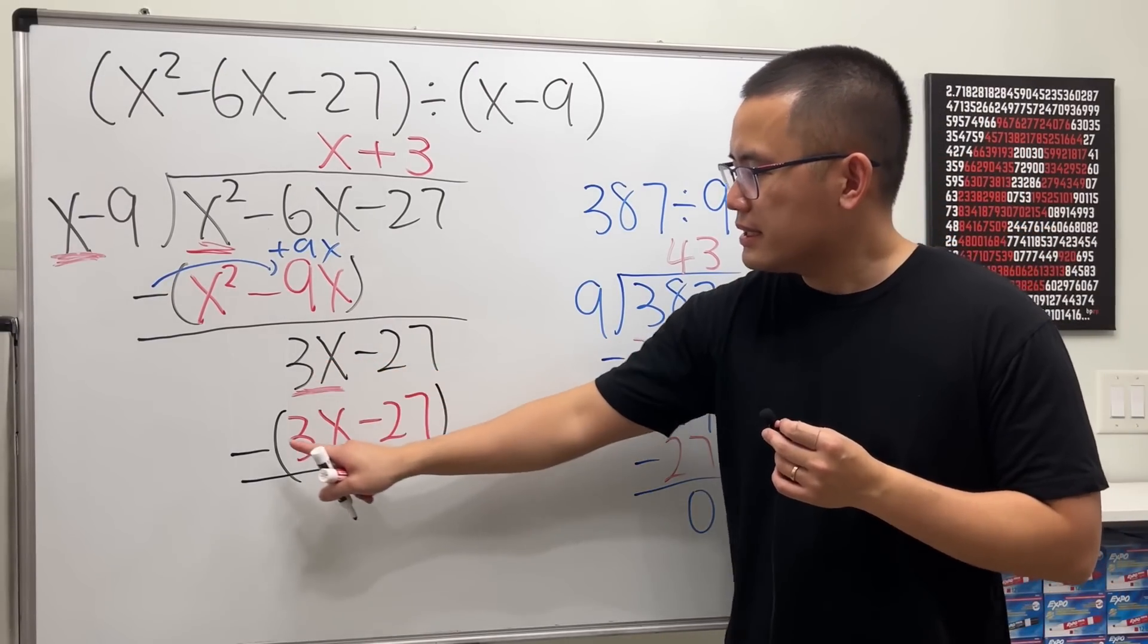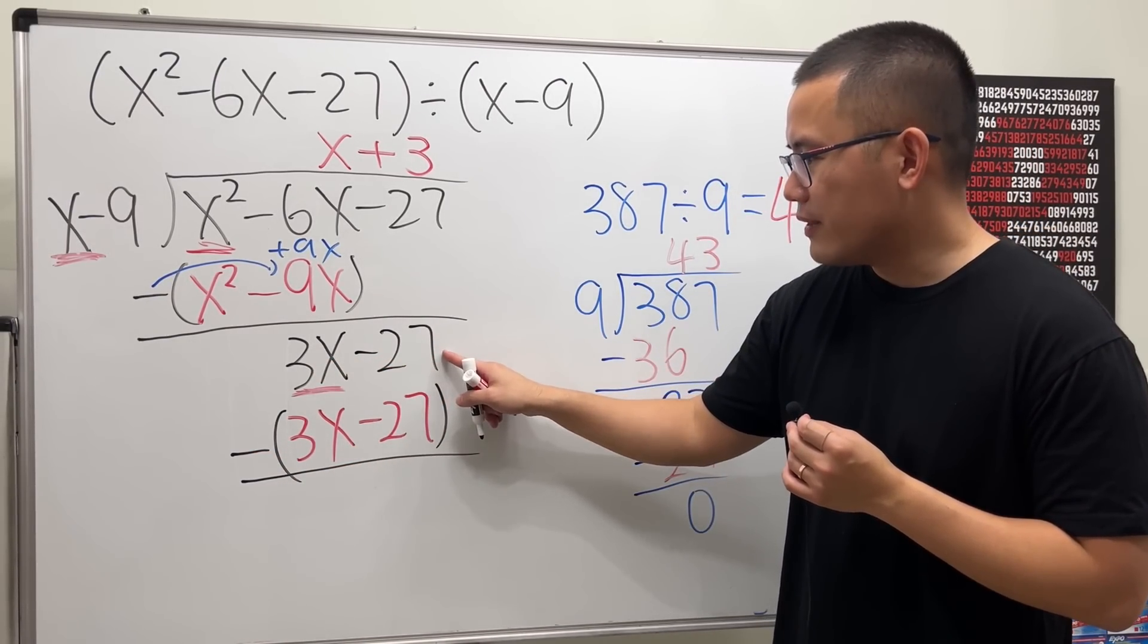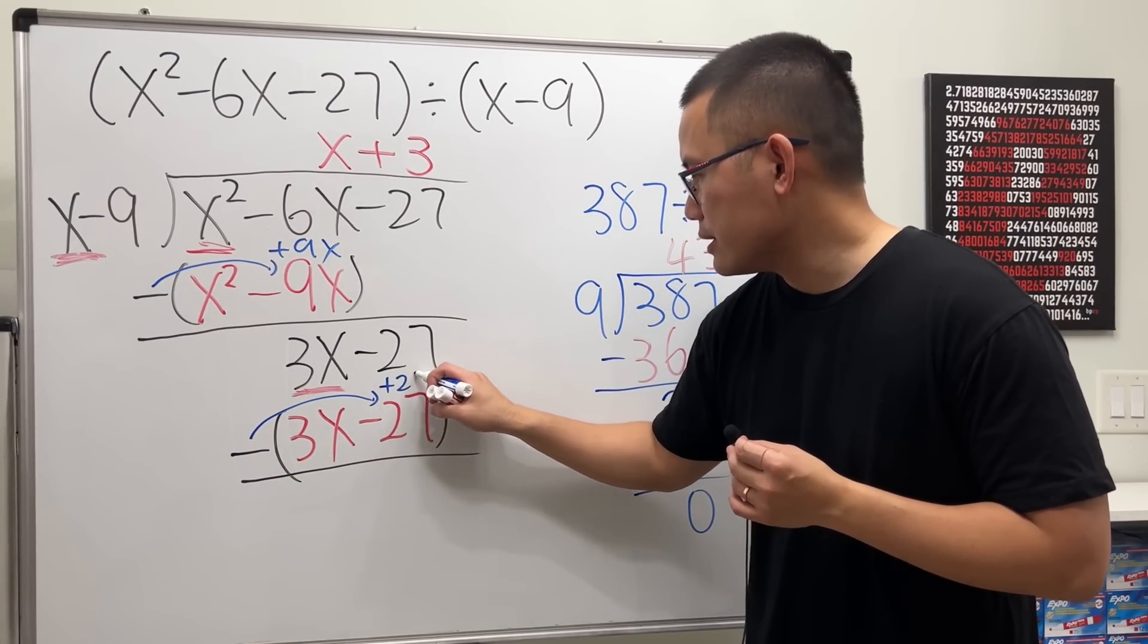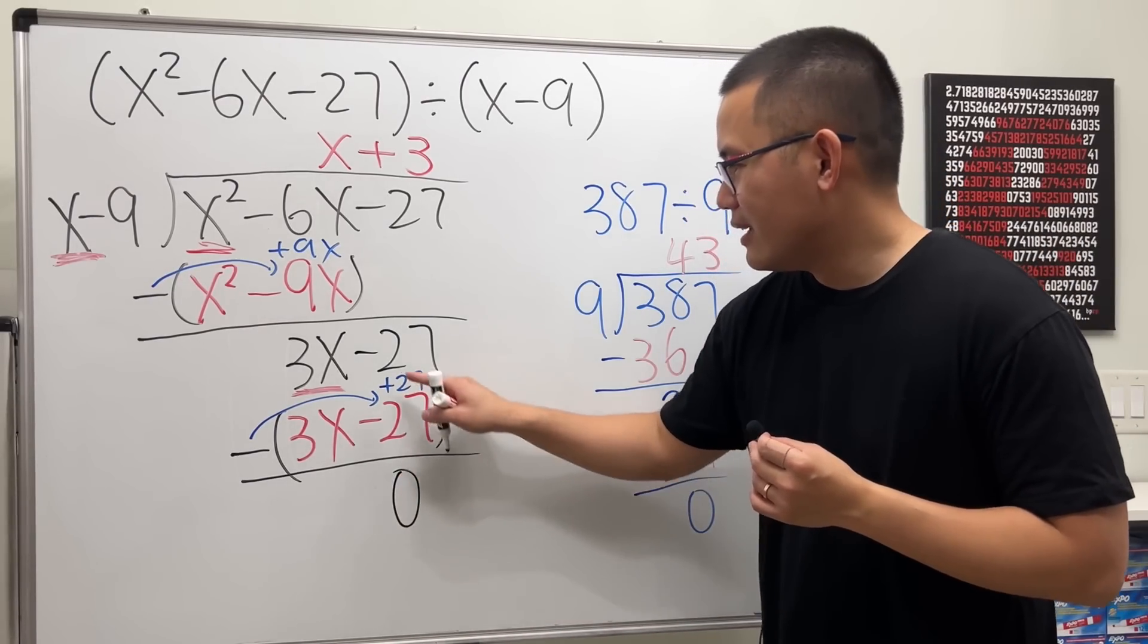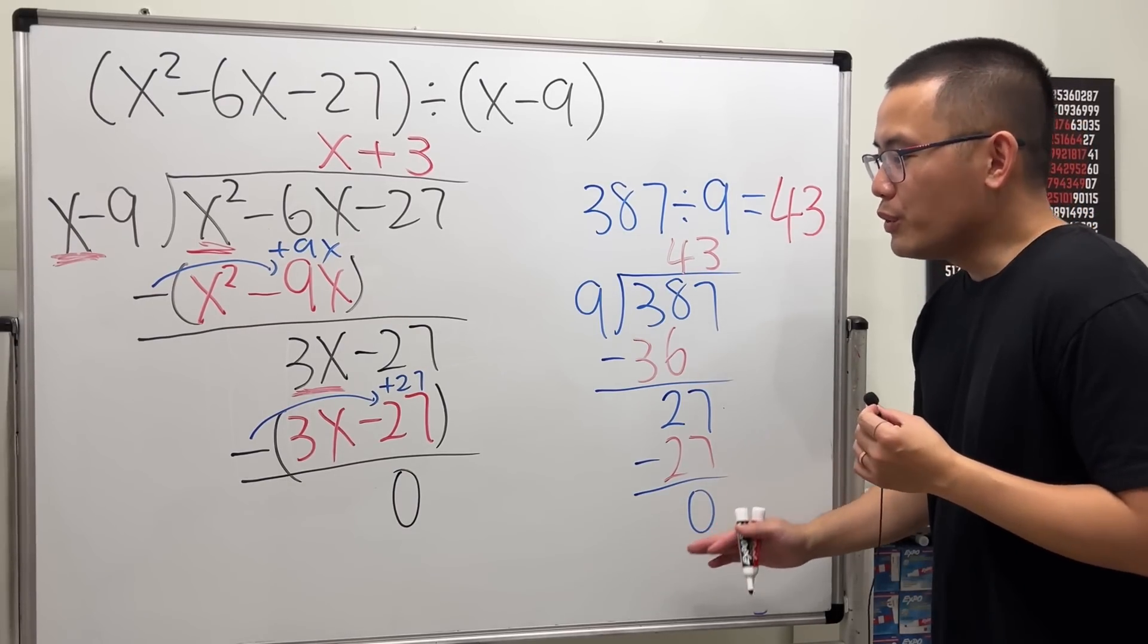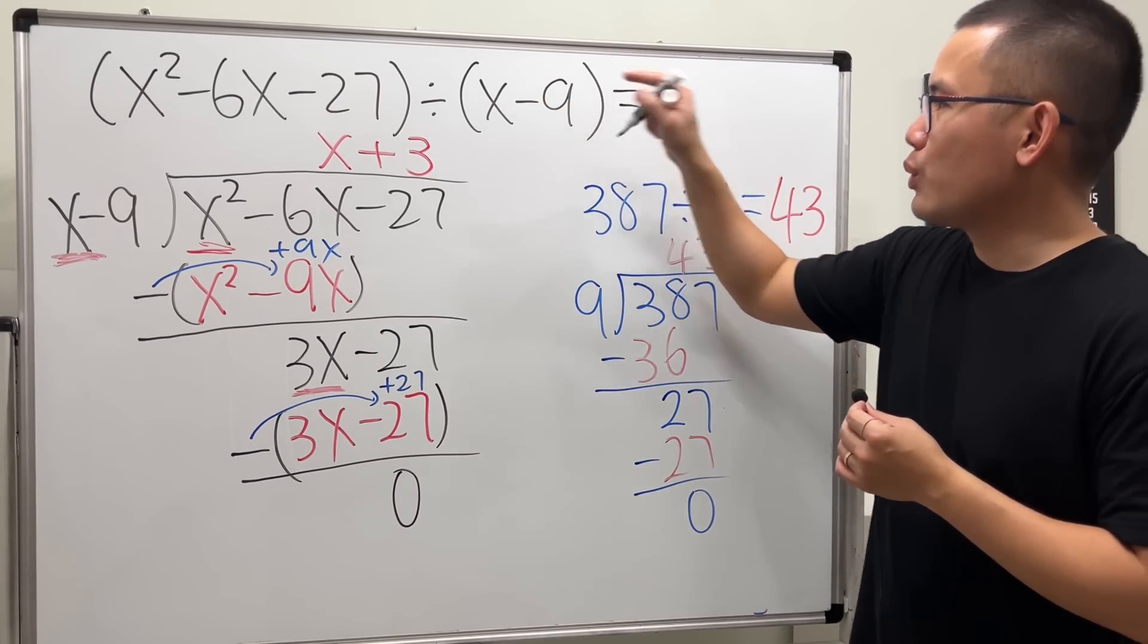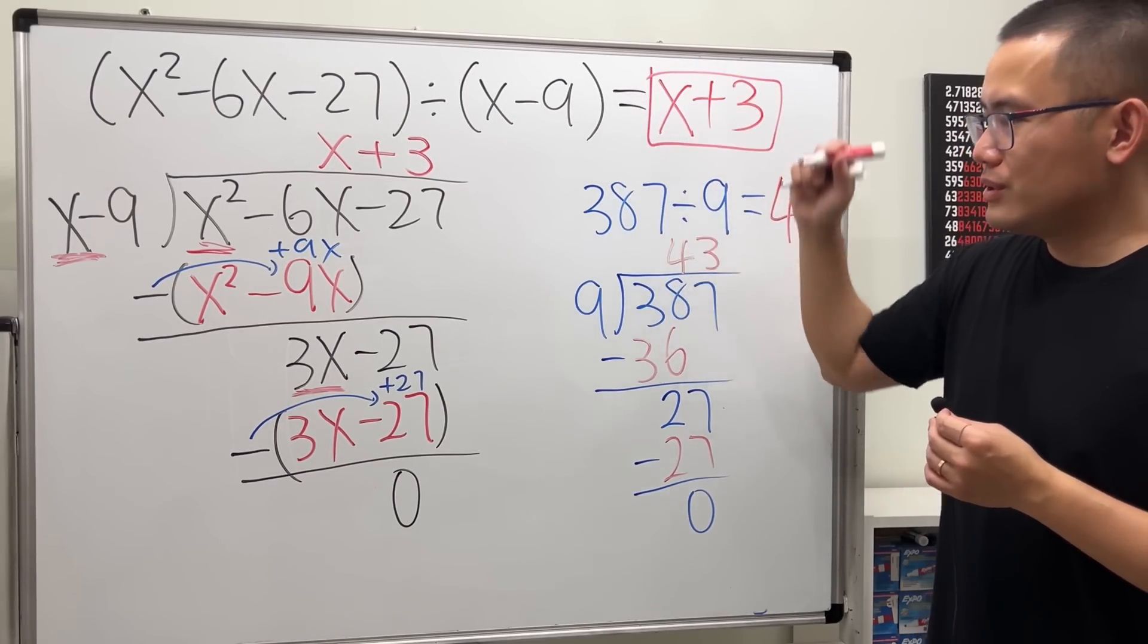Now, 3x minus 3x is 0. Good. And then this is negative 27 minus negative 27. So if we distribute this to that, it's going to be a plus 27. So this and that. Hey, it gives you 0. Negative 27 plus 27 is 0. And it's just like this. When we don't have any remainder, the remainder here is 0. And we're done. So the answer for this is just the quotient, which is x plus 3.